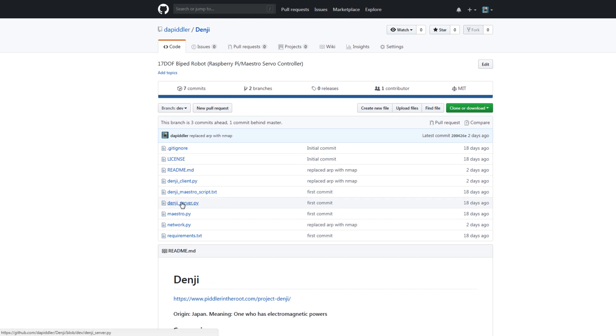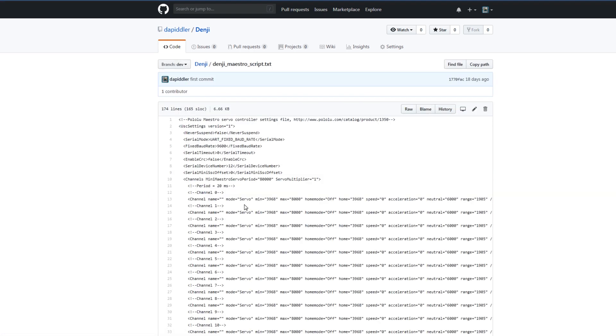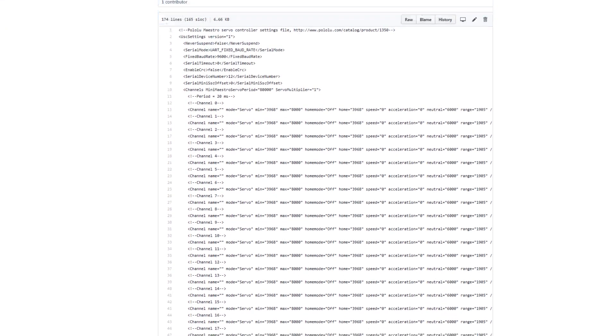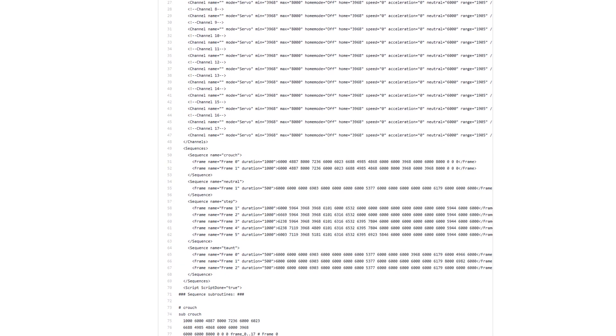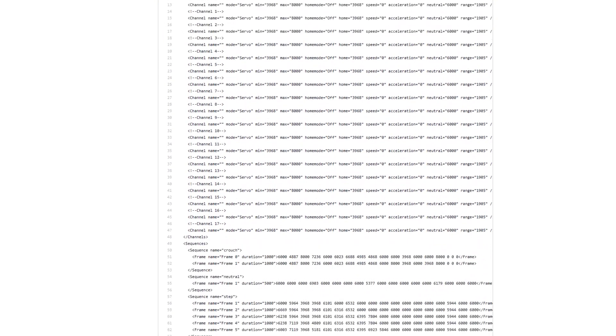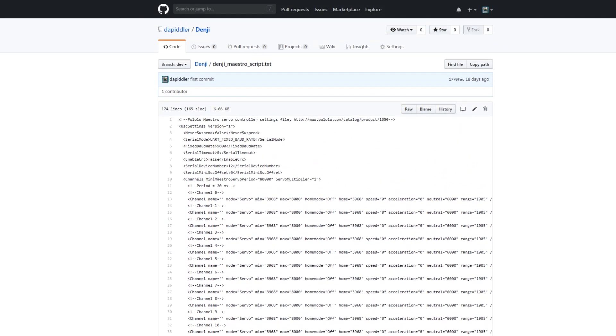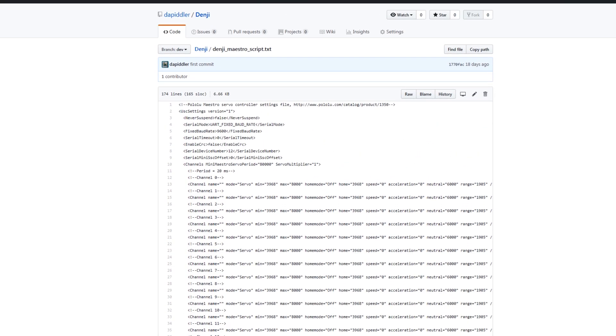The three main scripts that we are going to be concerned with is this denji_client.py, denji_server.py, and this denji_maestro_script.txt. So this is essentially all the recorded movements for the biped that are sequences of movements, and this is what you'll upload to your Maestro controller using the Pololu software. So most likely you're going to have to go and edit this file, but you can use it for testing purposes.